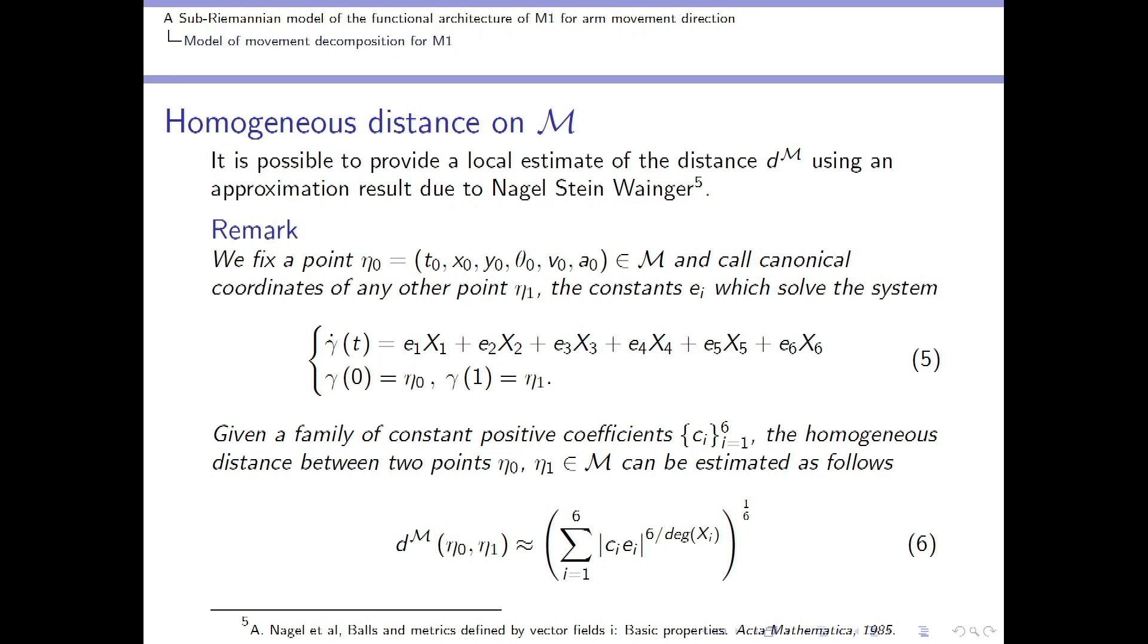We tried to solve this problem by using a local estimate of the distance dM by exploiting an approximation result due to Nagel-Stein-Wigner. I won't talk about the details of the local approximations, but this approximation is based essentially on two main facts. The first is that the generators of our horizontal distribution satisfy Hörmander's condition. And so it is possible to provide a basis for the whole tangent space. These three vector fields are obtained as commutators of a higher order.